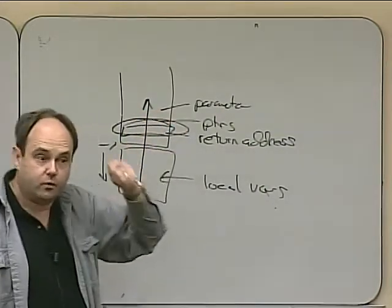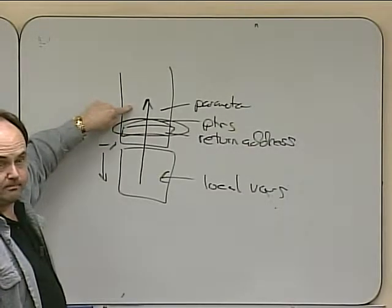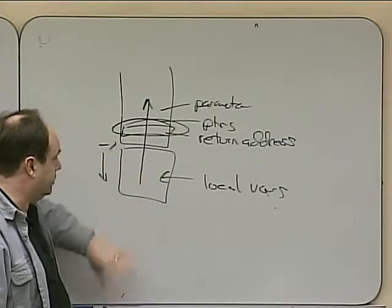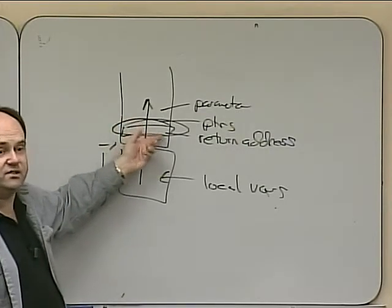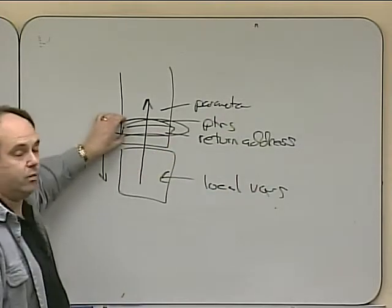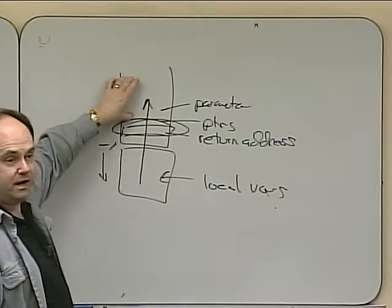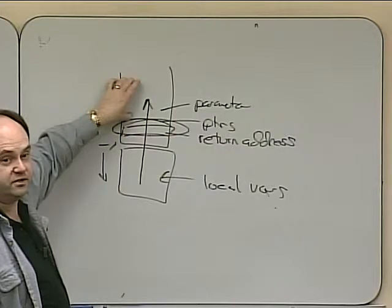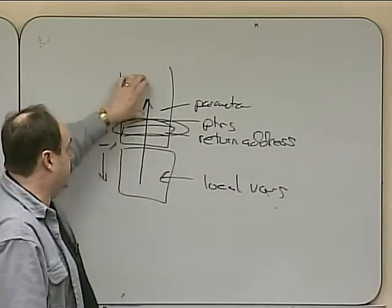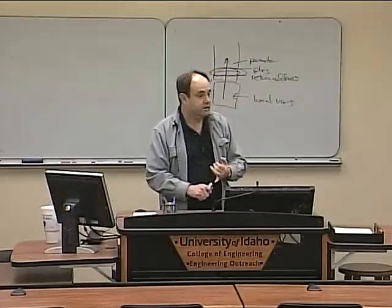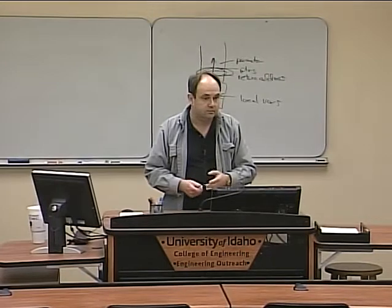The common approach is to overwrite the return address and the parameters. When the executing code wants to return, it goes to this return address, which is actually treated as an entry point — or the address of a well-known entry point into a library routine, an operating system routine, or runtime routine — with the parameters you already overwrote on the stack. So you can tell the system what to do: call this function with these parameters, which could be executing a shell script under new permissions or opening a network library.